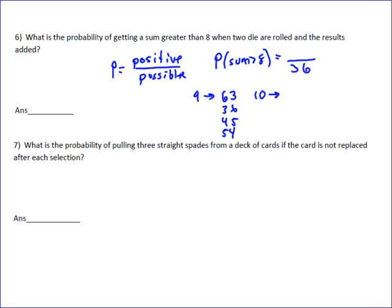10 is greater than 8, so that would be 6 and 4, or 4 and 6, and then 5 and 5. 11 is greater than 8, and on 11 you could have 5 and 6, or 6 and 5. Then 12 is greater than 8, and the only way to get 12 is 6 and 6. So the total number would be 4 plus 3 plus 2 plus 1, which would give you 10.